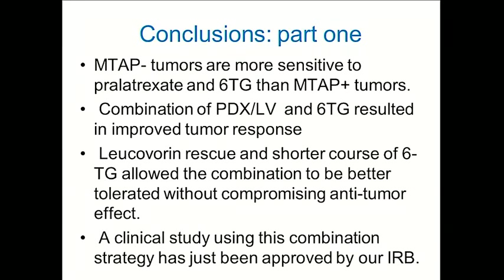In another recently published study, we showed that leucovorin rescue for pralatrexate — like leucovorin rescue for methotrexate — causes decreased toxicity without compromising the anti-tumor effect. A shorter course of 6-thioguanine allowed the combination to be better tolerated.